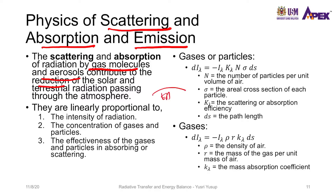For example, this is the Earth and this is the atmospheric layer. Shortwave radiation that passes through the atmospheric layer would be scattered or absorbed by the gas and aerosol, as well as the longwave radiation that comes from the Earth, which would also be affected by these gases and aerosols.